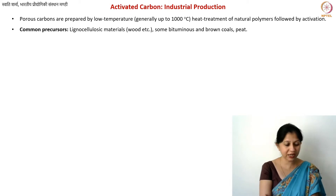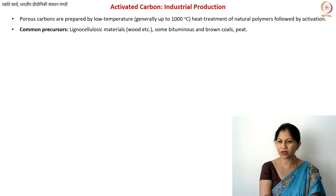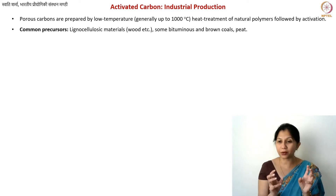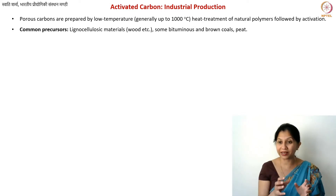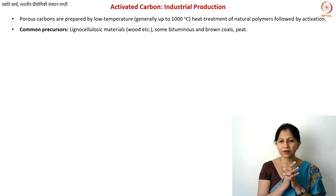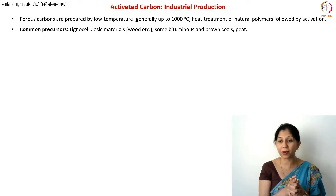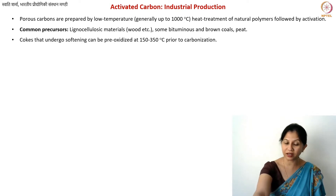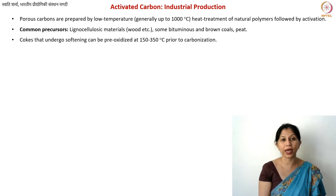Peat is also one more precursor. Peat is an organic material which has partially converted into carbon, but not completely yet. All of these materials are basically high carbon-containing natural materials — that is what you use as precursors for making activated carbons.